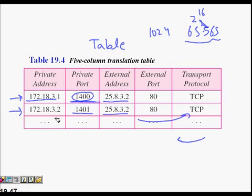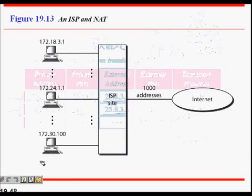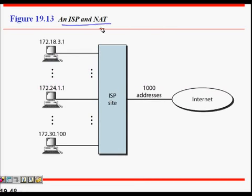You might say what happens if both have port number 1400? The probability of choosing the same number from range 1024 to 65k is very, very low. For an ISP with a thousand addresses and four thousand machines, if on average only a thousand machines are on at one time, it will just use those thousand IP addresses.